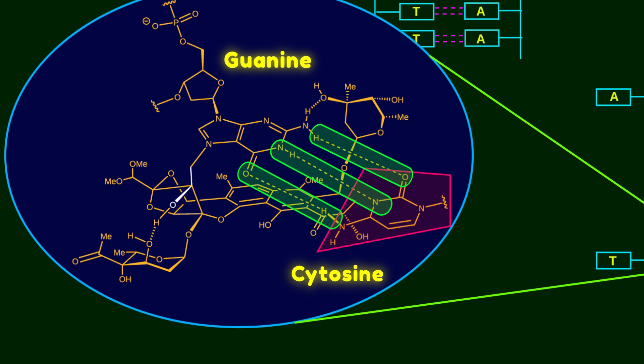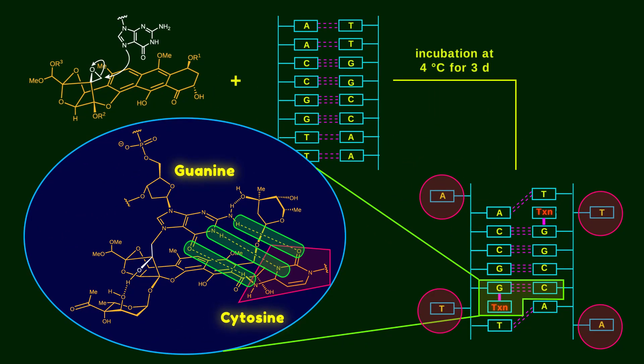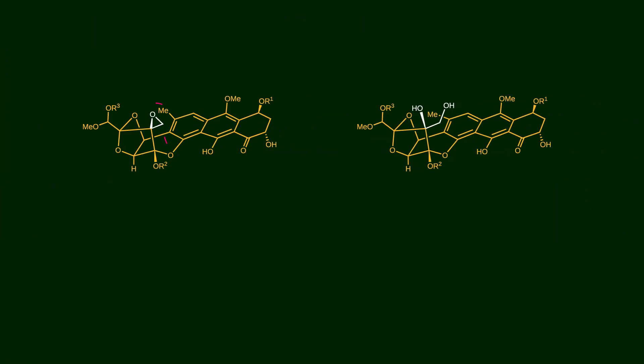As a result of tyroxycarcin binding to DNA, the DNA structure is interrupted. The A and T bases lose contact with their complementary bases and flip out of the double strand. Now you can understand the role of the epoxide ring in type 1 tyroxycarcins — because of its electrophilicity, it acts as a DNA-alkylating warhead. But type 2 tyroxycarcins lack the epoxide moiety, which explains the low bioactivity of this family.